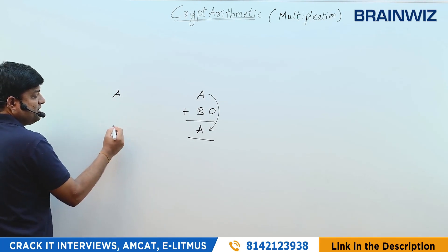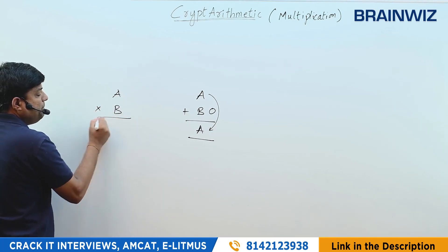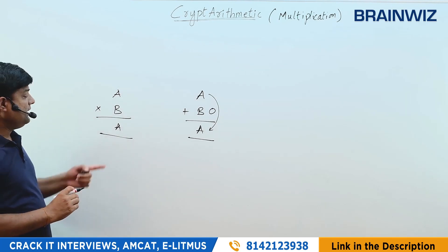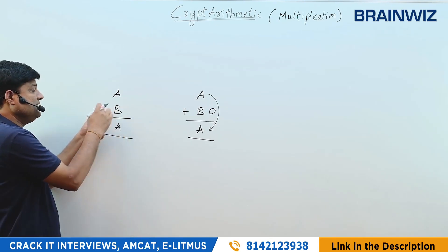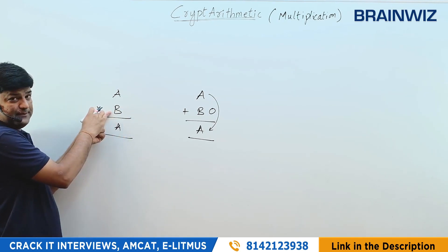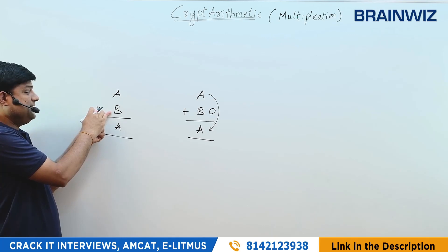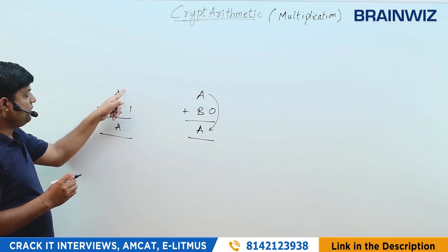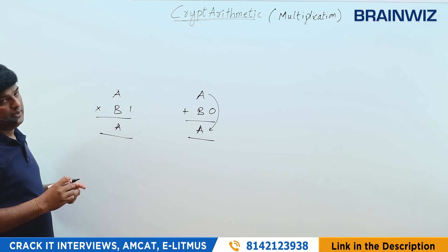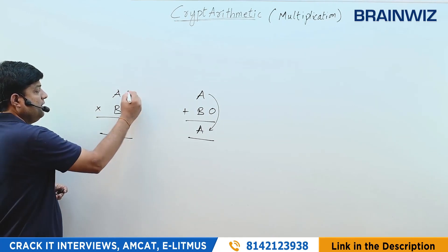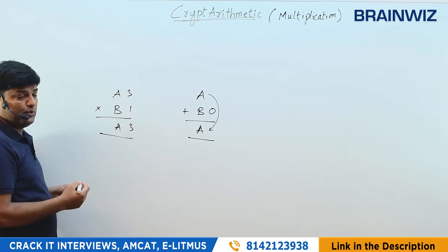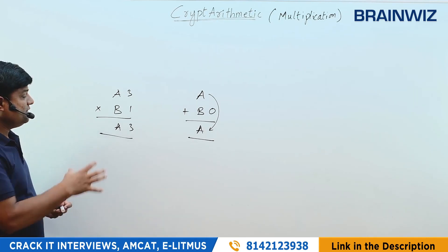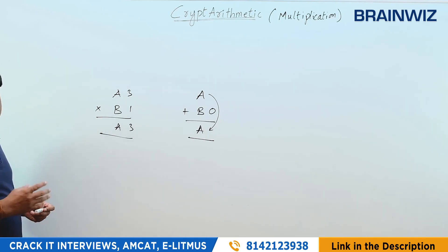Now in case of multiplication, A multiplied with B giving A back — B cannot be 0 because this is a multiplication. The basic rule says B has to be 1, because 1×3=3, 1×2=2, 1×4=4, 1×5=5. These kinds of rules are very important to remember.